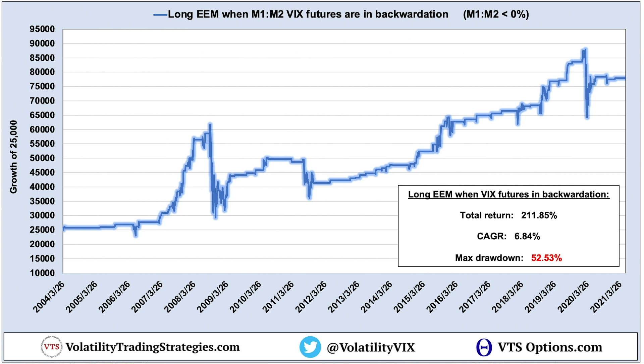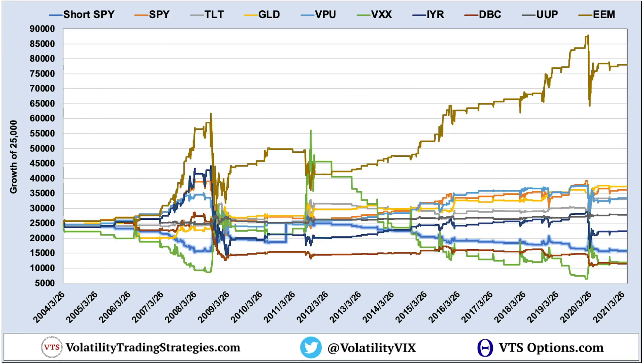This last one before the summary is actually the best performer of the bunch — that is emerging markets, the EEM. With a 6.84% annual return, it has the best absolute return of the bunch by far, for only 16% of trading days when VIX futures were in backwardation. That massive drawdown should give anybody some serious pause, but at the very least it's interesting that emerging markets would have done so well. Just another one to throw on the list for tactical investors always looking for potential ways to mitigate risk.